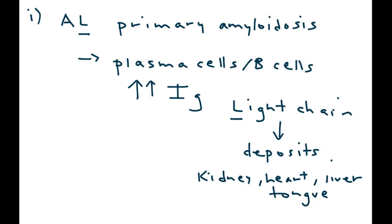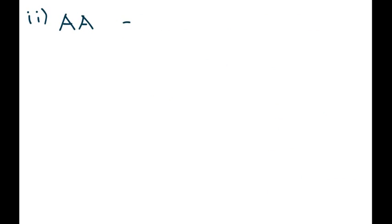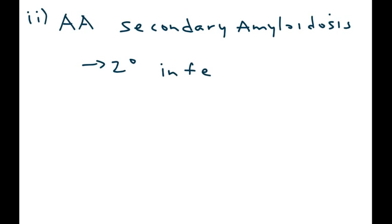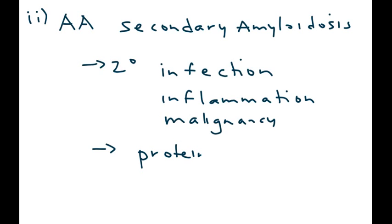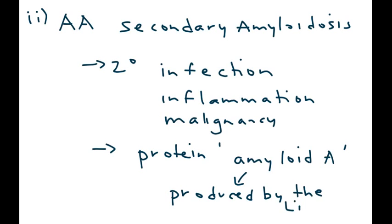The second type of amyloidosis is known as AA, and that is called secondary amyloidosis. The reason it's called secondary is because this type of amyloidosis happens secondary to some sort of pathology, some sort of problem like infection or inflammation or malignancy. And when it does happen, it produces an abnormal protein called amyloid A. And that amyloid A protein goes and deposits in organs and causes organ damage, and this amyloid A protein is produced by the liver. So that's an important point to remember.